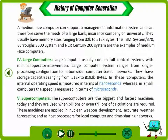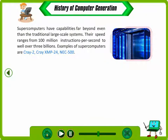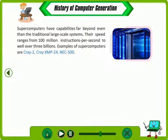Supercomputers. Supercomputers are the biggest and fastest machines today and are used when billions or even trillions of calculations are required. These machines are applied in nuclear weapon development, accurate weather forecasting, and as post-processors for local computer and time-sharing networks. Supercomputers have capabilities far beyond even traditional large-scale systems. Their speed ranges from 100 million instructions per second to well over 3 billion. Examples of supercomputers are Cray-2, Cray XMP-24 and ETA-10.